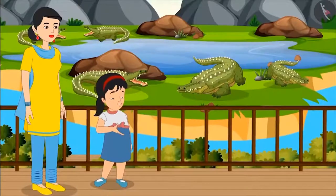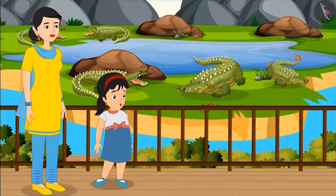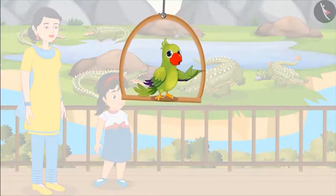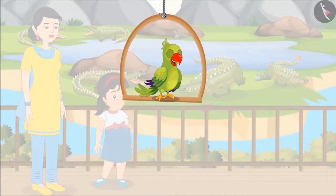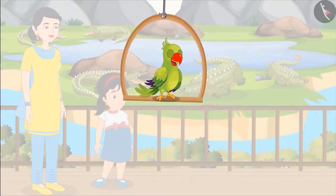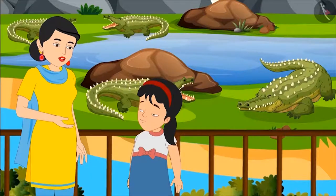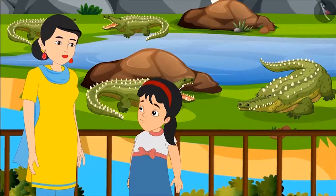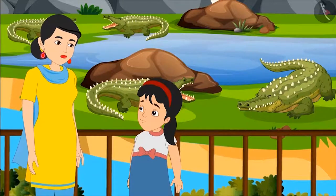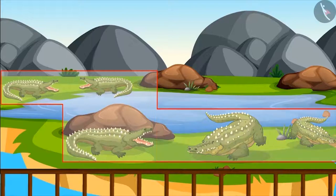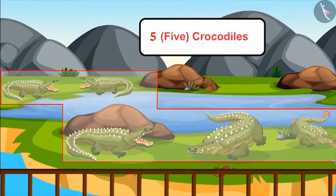Pinky asks her mom which animal is in the water paddock, as she has never seen it before. The narrator asks children if they can tell which animal is there and what its number is. Mom reveals there are crocodiles in that paddock. Pinky counts: one, two, three, four and five — that means the paddock has five crocodiles.